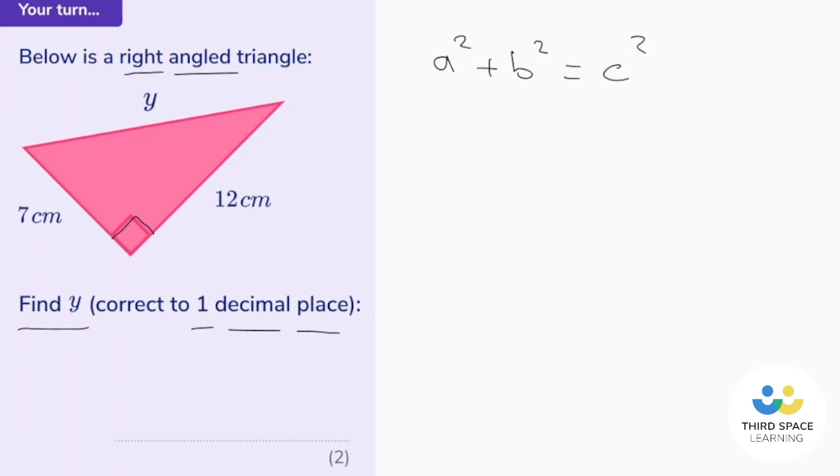Okay, next job. Let's label our triangle. So the longest side is the side opposite that right angle. So that's c and then it doesn't matter for the other two. So let's call that one a and that one b. Let's substitute these values into Pythagoras's theorem. So a is 7. So that's 7 squared plus b which is 12. So that's 12 squared equals c squared. Well, c is y. So that's y squared.